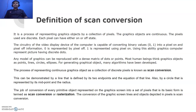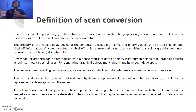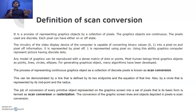Scan conversion can be demonstrated by a line defined by two endpoints with a slope — meaning the line has an equation — or by a circle represented by its midpoint and radius. The conversion of every primitive object on the graphic screen into a set of pixels is called scan conversion, and it can also be termed rasterization. We have certain primitive objects from which we can make more complex ones.